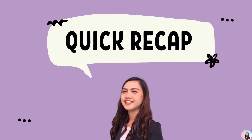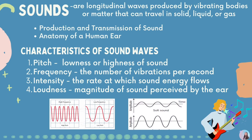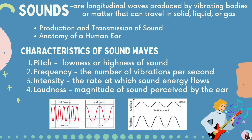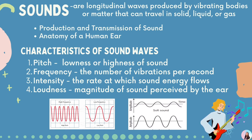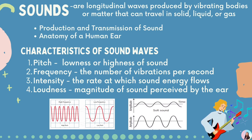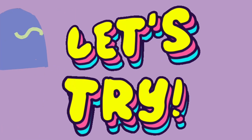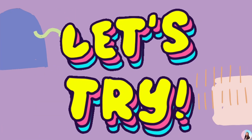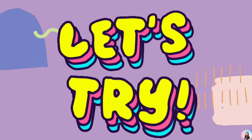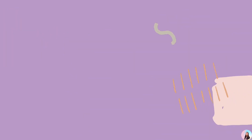Let's have a quick recap. In this video we discussed sounds — the production and transmission of sound, the anatomy of the human ear, as well as the characteristics of sound waves, which are pitch, frequency, intensity, and loudness. Now let's try answering a five-item quiz about sound waves. You have a minute to answer. Good luck!